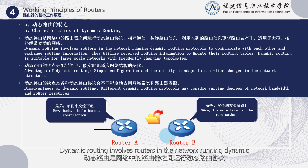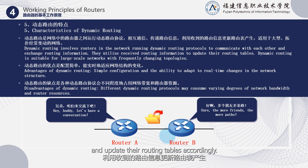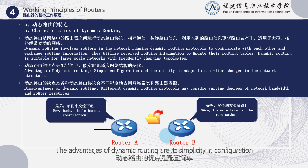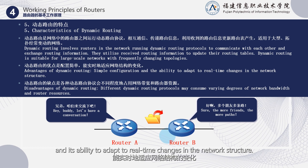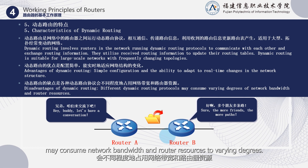Dynamic routing involves routers in the network running dynamic routing protocols to communicate with each other, exchange routing information, and update their routing tables accordingly. It is suitable for large networks with frequently changing topologies. The advantages of dynamic routing are simplicity in configuration and its ability to adapt to real-time changes in the network structure. However, the downside is that different dynamic routing protocols may consume network bandwidth and router resources to varying degrees.